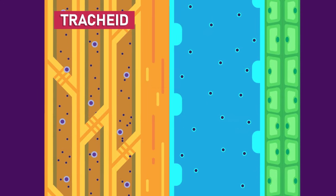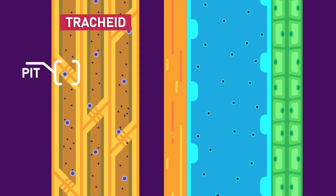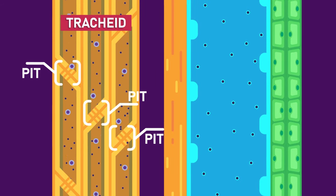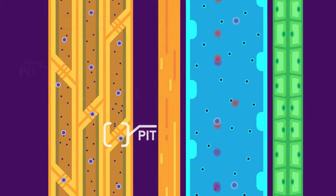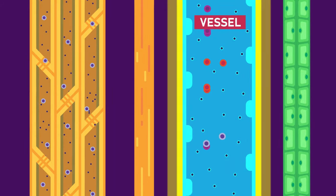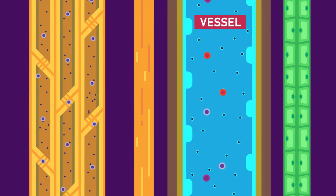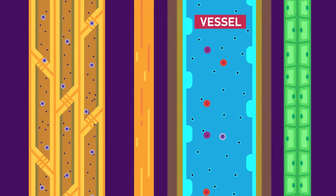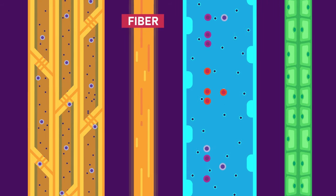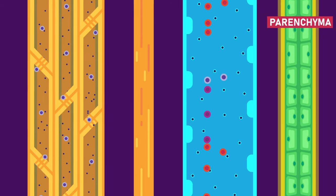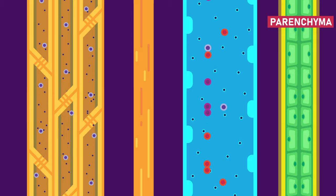The water in tracheids does not flow continuously. The roots and leaves are connected through a series of tracheid cells with pitted walls. In contrast, the xylem vessels are long, wider, hollow tubes, continuously stretching from the roots to the leaves. The fibre cells function mainly as supporting structures, and the parenchyma, the only living cells of the xylem, help with the food storage.